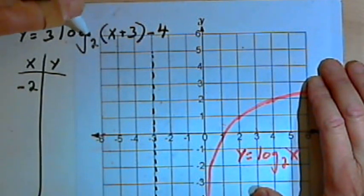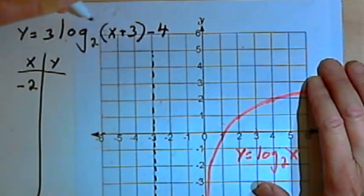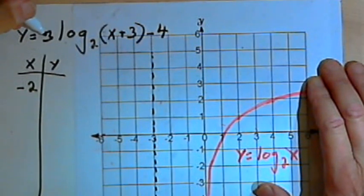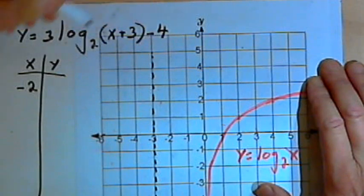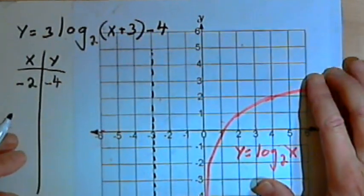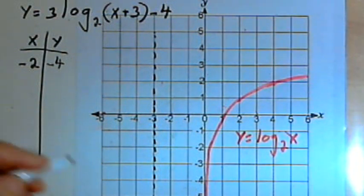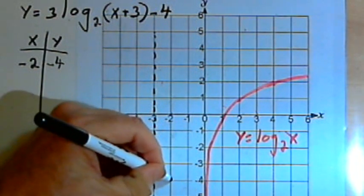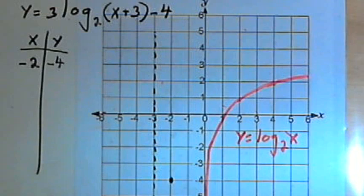So I'm going to have the log base 2 of 1, which is 0. I'll multiply the 0 times 3, which is still 0. And then I'll subtract 4. So that's going to be negative 4. So I'm going to have a point at (-2, -4).